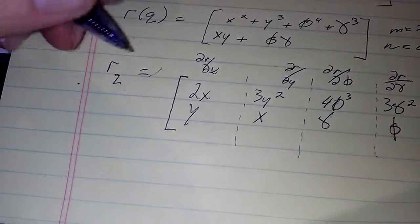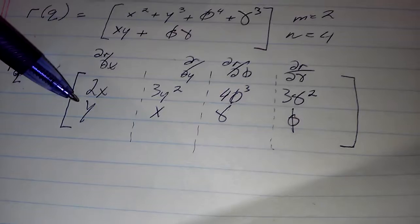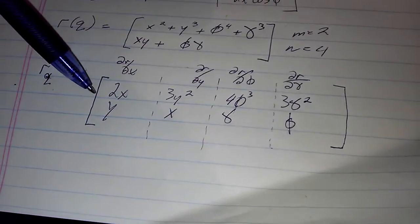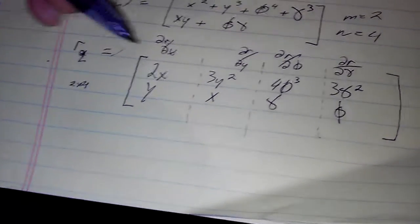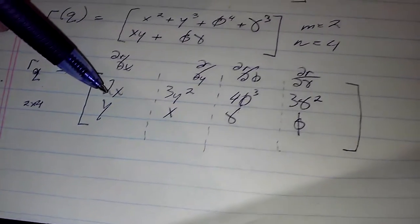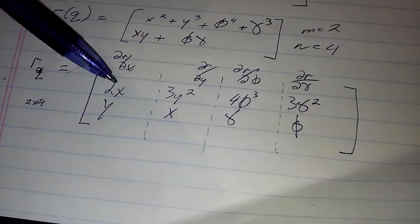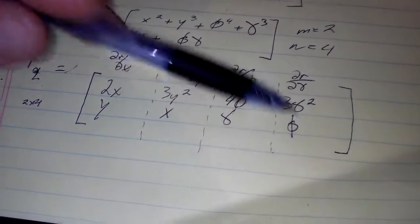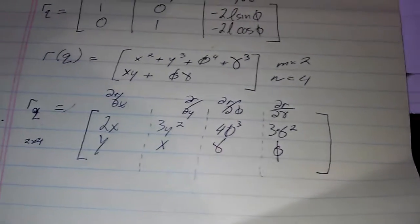So here is your r—should be r sub q. We have a two by four matrix with 2x, 3y squared, 4 phi cubed, 3 gamma squared in the first row, and y, x, gamma, and theta in the second row. So this is how you do the partial differentiation of a matrix. Like, comment, subscribe, and I hope this was helpful.